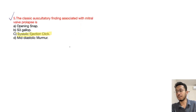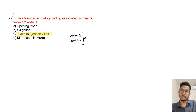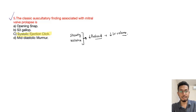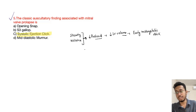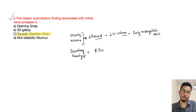An important concept is dynamic auscultation. When the patient is standing or performing Valsalva, there is a decrease in preload and decrease in left ventricular volume, so the systolic phase ends early, resulting in an early mid-systolic click. Conversely, conditions that increase preload — such as squatting or hand grip — cause an increase in LV volume, leading to a late mid-systolic click.